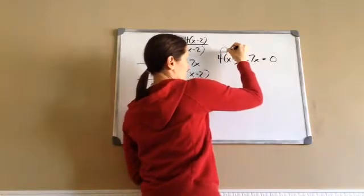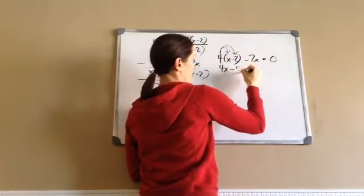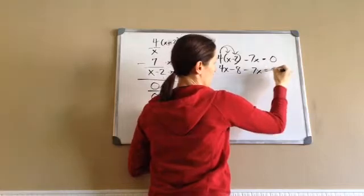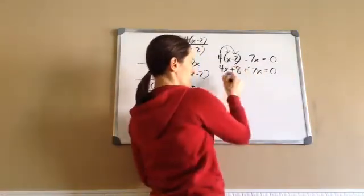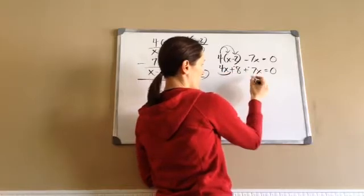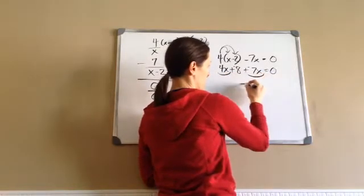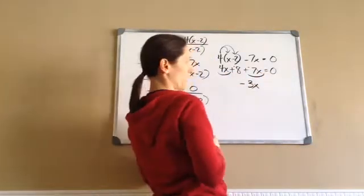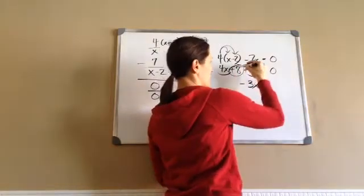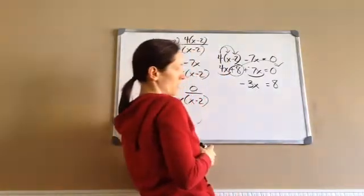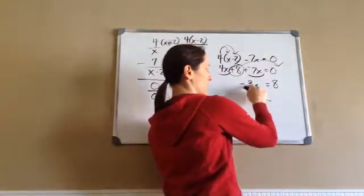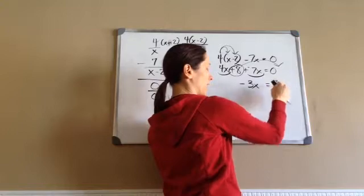Again, we do this. 4X minus 8 minus 7X equals 0. I'm going to want to make everything plus negatives. Now, I'm going to take my 4X plus my negative 7X. And that gives me negative 3X when I add those together. But then I've still got this plus negative 8. And I'm going to bring it over for positive 8.